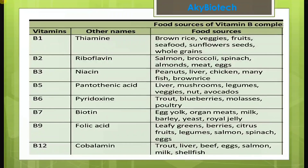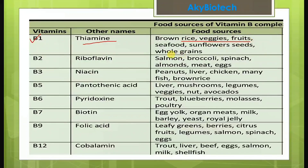Now in tabular form, another slide shows the food sources in detail — this will be easy to remember. Vitamin B1 — thiamine — food sources include brown rice, vegetables, fruits, seafood, sunflower seeds, and whole grains.